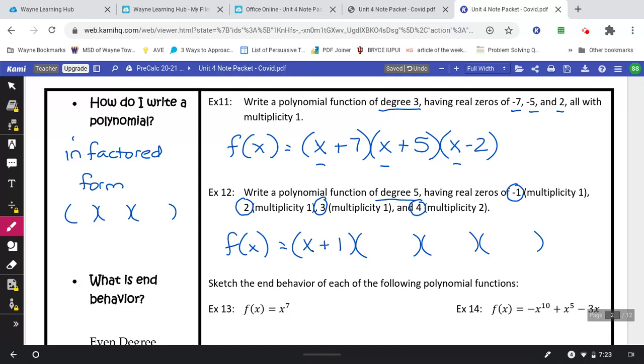You should have x plus 1. Multiplicity of 1 means I don't need an exponent. 1 is understood. x minus 2, multiplicity of 1, x, change the sign again, minus 3, multiplicity of 1, and x minus 4. But this one has a multiplicity of 2, so we need to make sure we put the 2 on the outside.